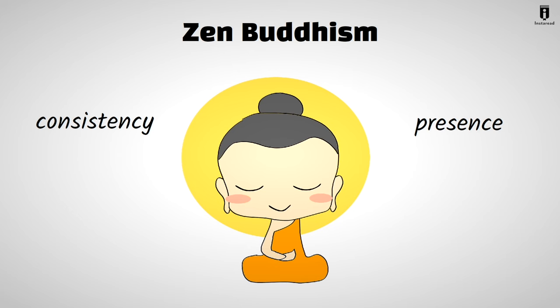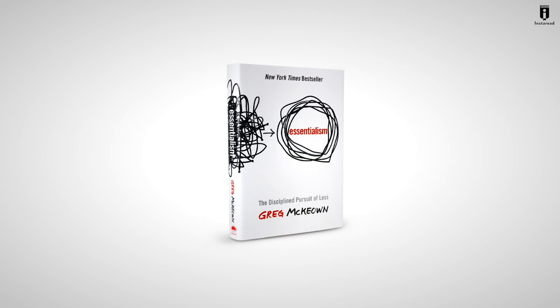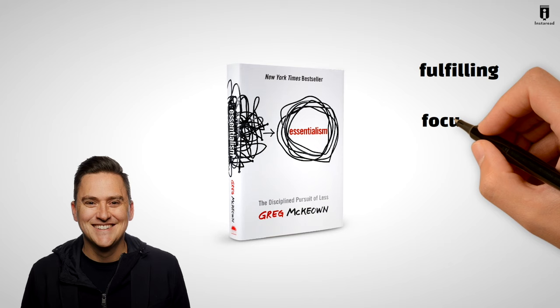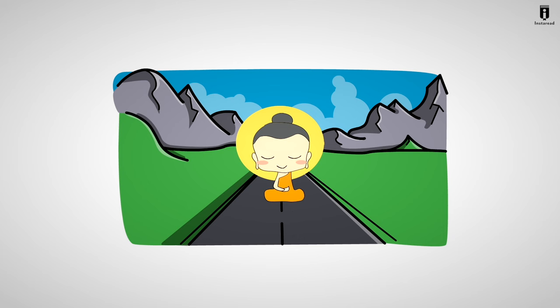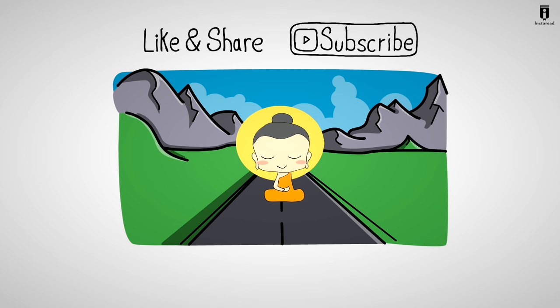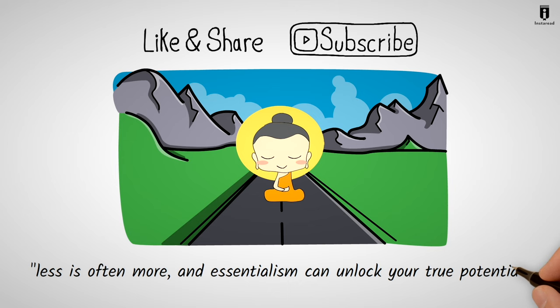And there you have it, our guide to Essentialism by Greg McKeown. This disciplined pursuit of less can lead to a more fulfilling, focused, and productive life. By embracing Essentialism, you can achieve more by doing less, and truly excel in what matters most to you. Thank you for joining us on this enlightening journey. If you found this video valuable, don't forget to like, share, and subscribe for more life-changing content. Until next time, remember, less is often more, and Essentialism can unlock your true potential.